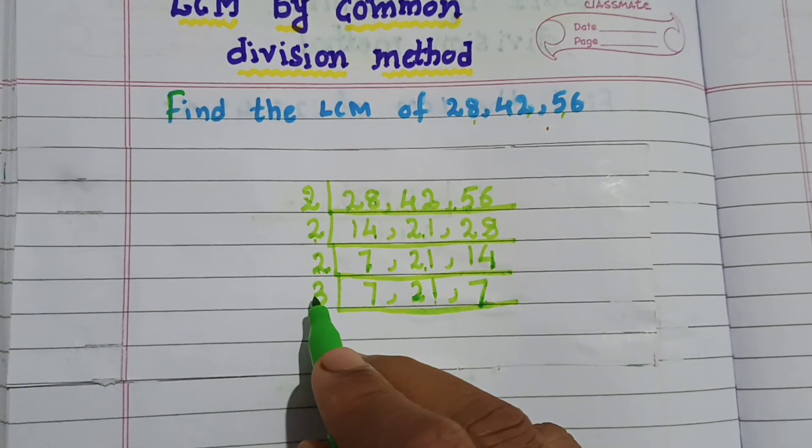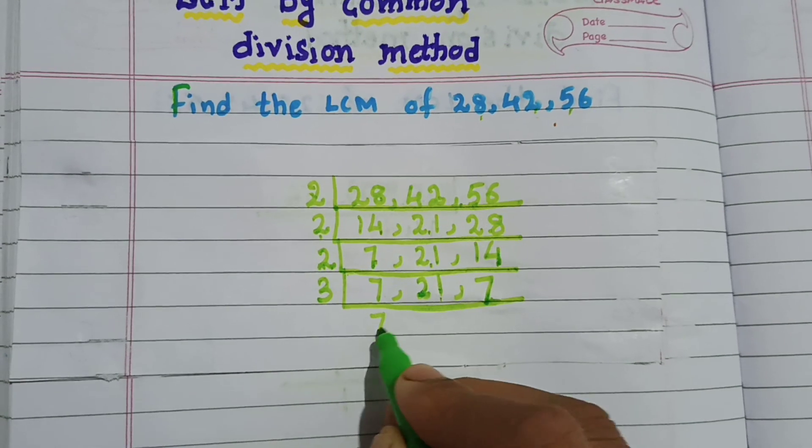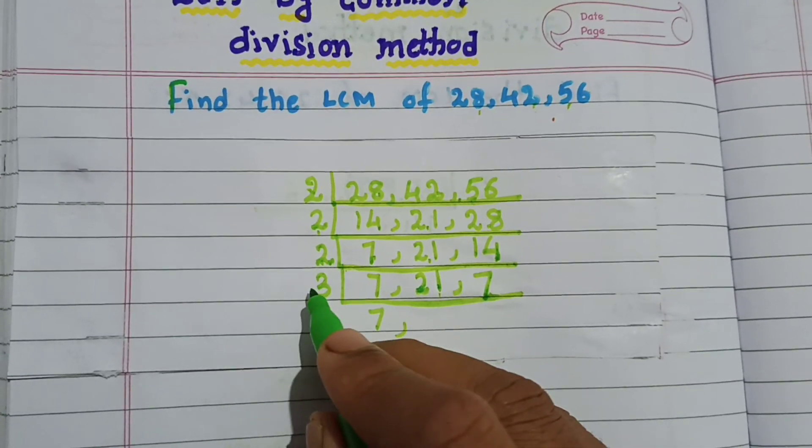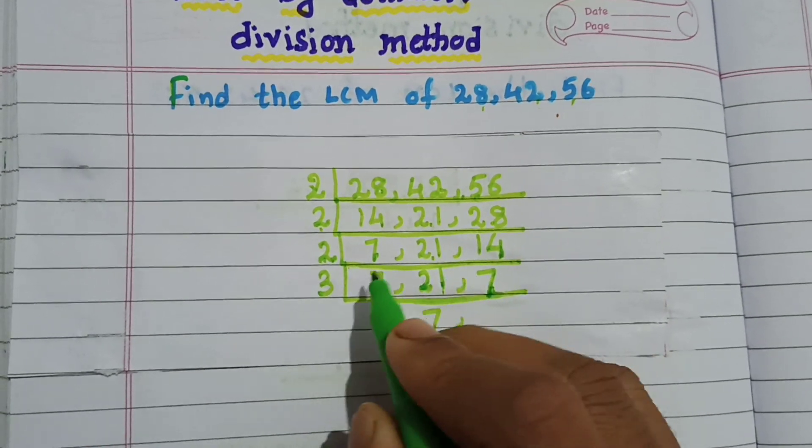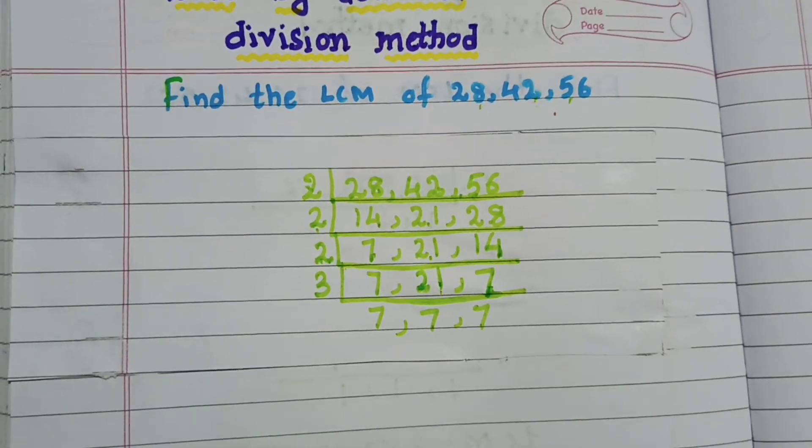7 does not divide by 3, so write as it is. 21 divided by 3 gives 7. Then, 7 does not divide by 3, as it is.